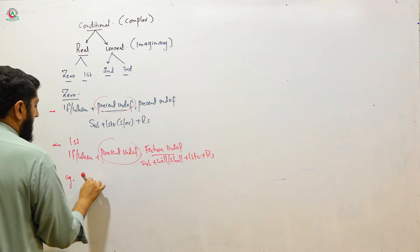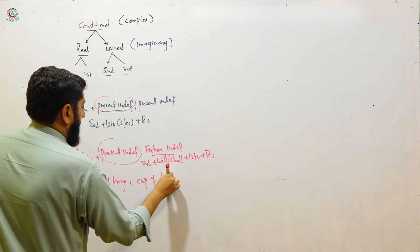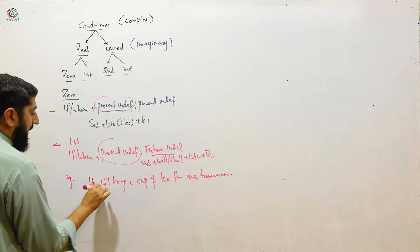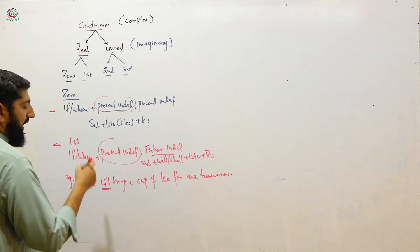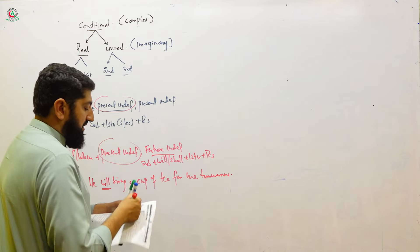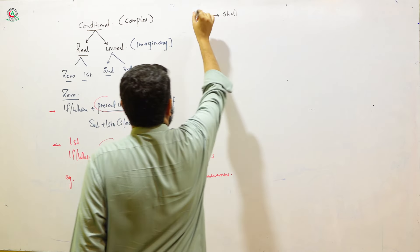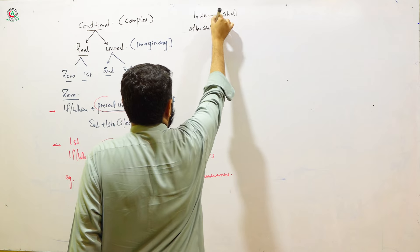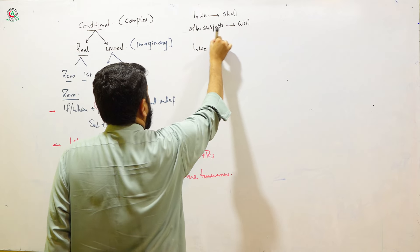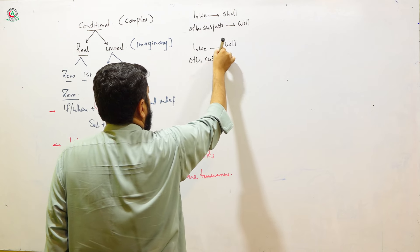For example: 'He will bring a cup of tea for me tomorrow.' In this sentence, I am referring to the future, and for future we use will or shall. If you recall, we discussed this in detail: with I or we, we use shall; with other subjects in British English, we use will.